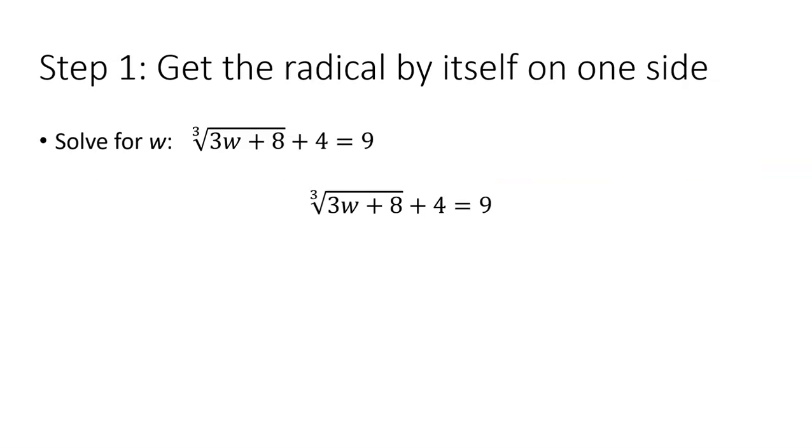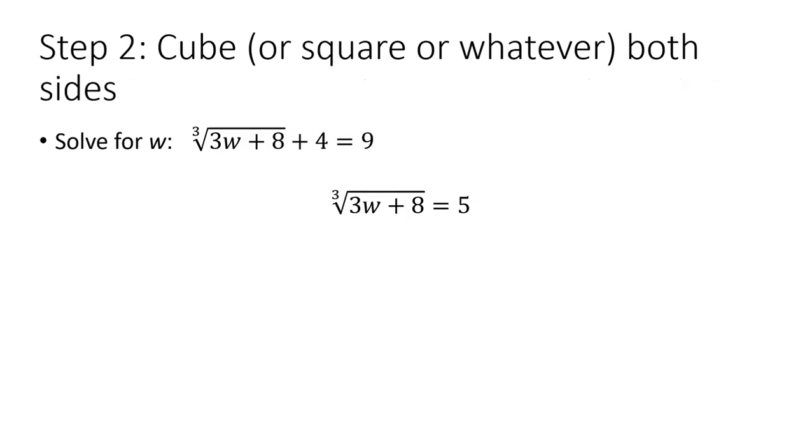So once we do that, now we have that cube root all alone on the left-hand side. Now we will cube, or square, or whatever it takes, but in this instance, because we have a cube root, we will cube both sides of our equation. That makes the left-hand side just 3w plus 8, and our right-hand side now turns into 125, because we had to cube the 5.